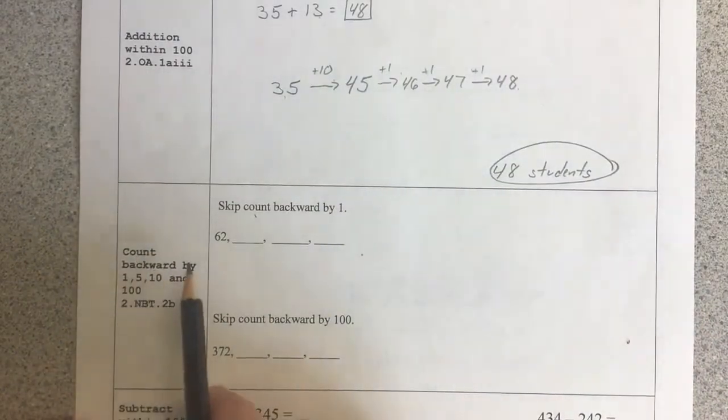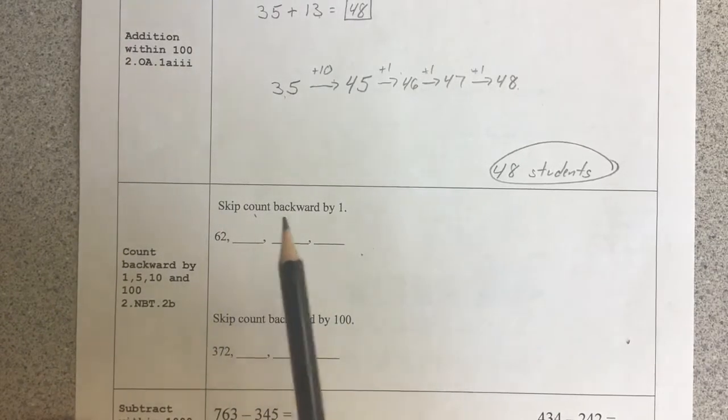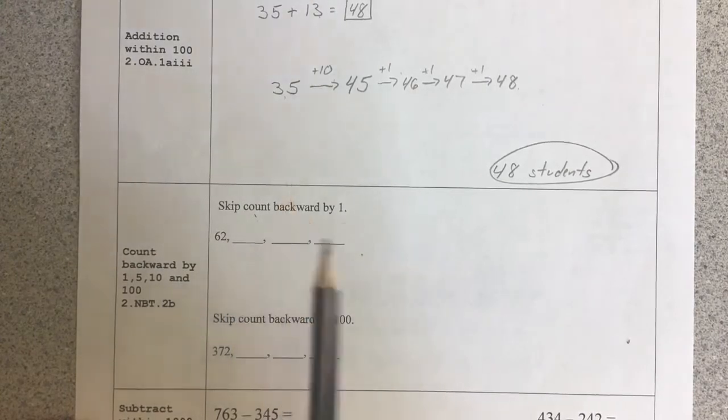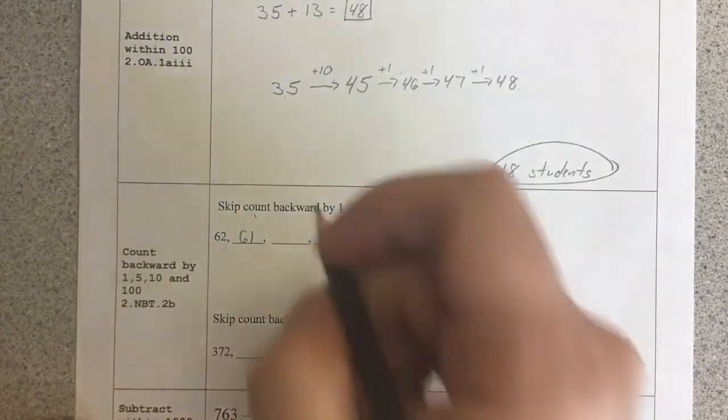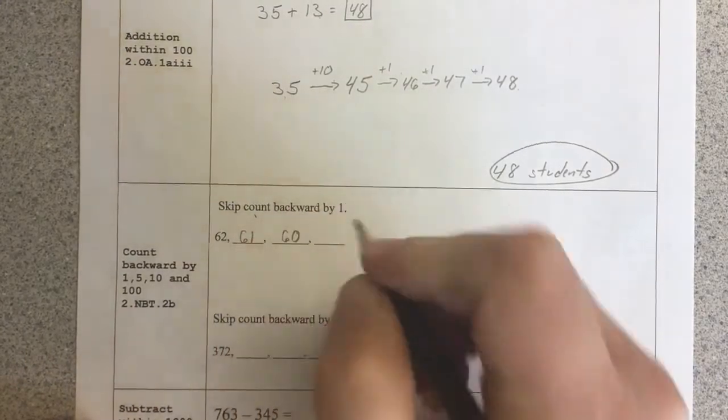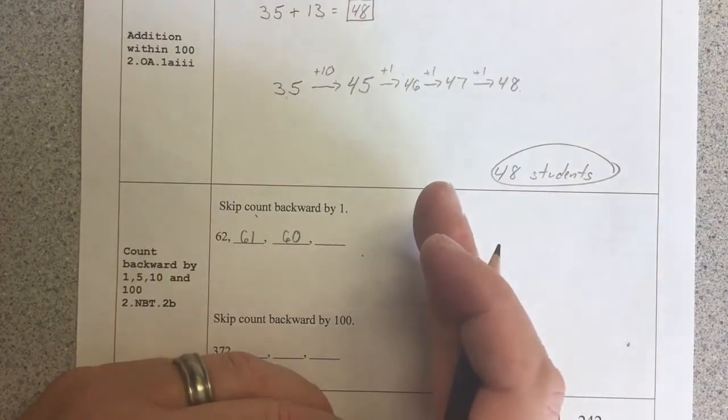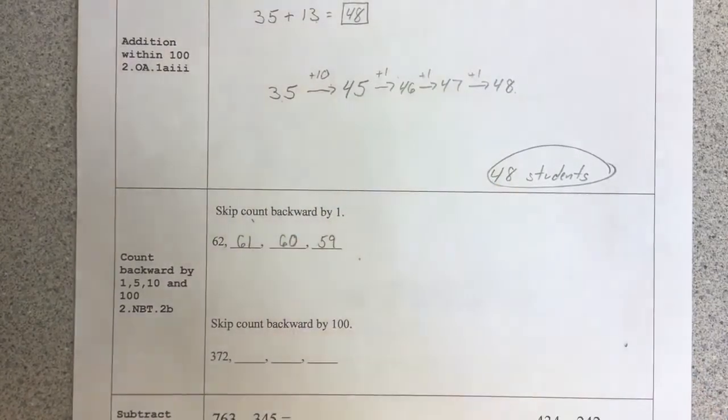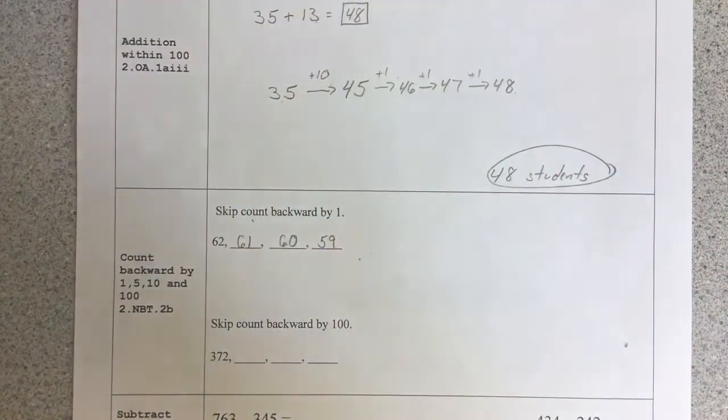Now, count backward by 1, 5, 10, and 100. The first time, I'm skip counting backward by 1. So I'm going to have 62. If I go backward, I'd have 61. Take 1 one away, I'm at 60. Now if I go backward 1 more, I have to go into the 50s. That's 59. So basically what it is, I took a 10, broke it apart, took 1 away, and I had 9 remaining. So 59.